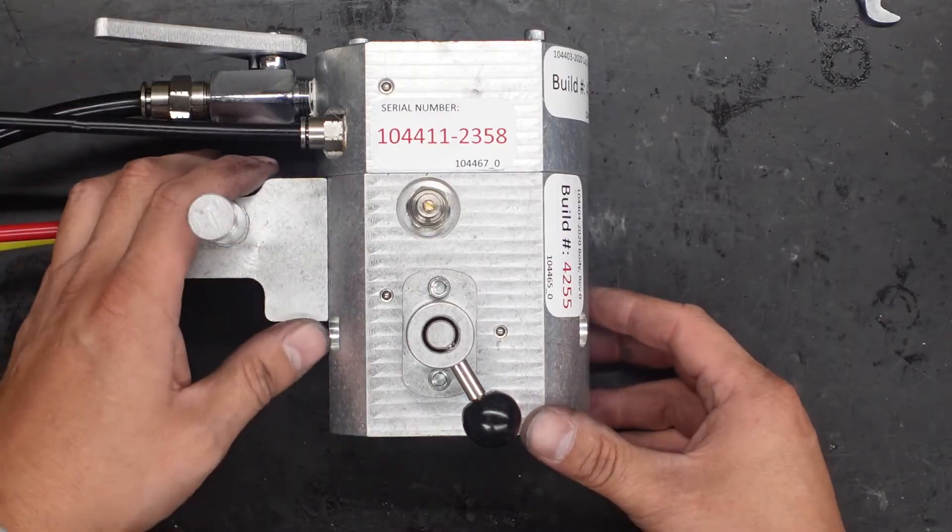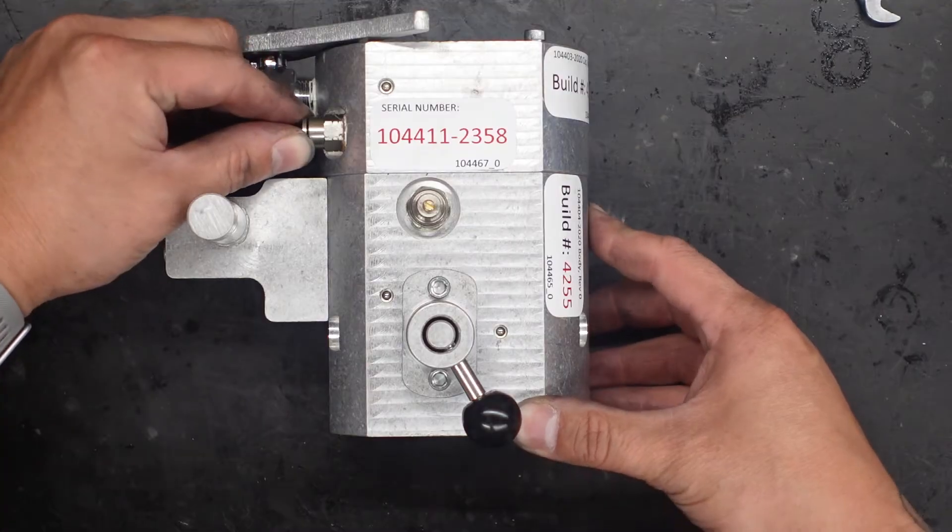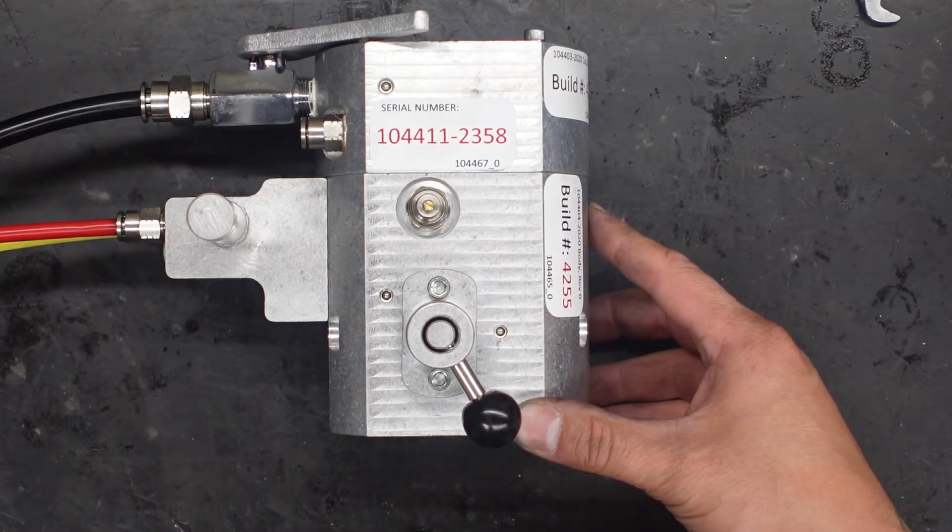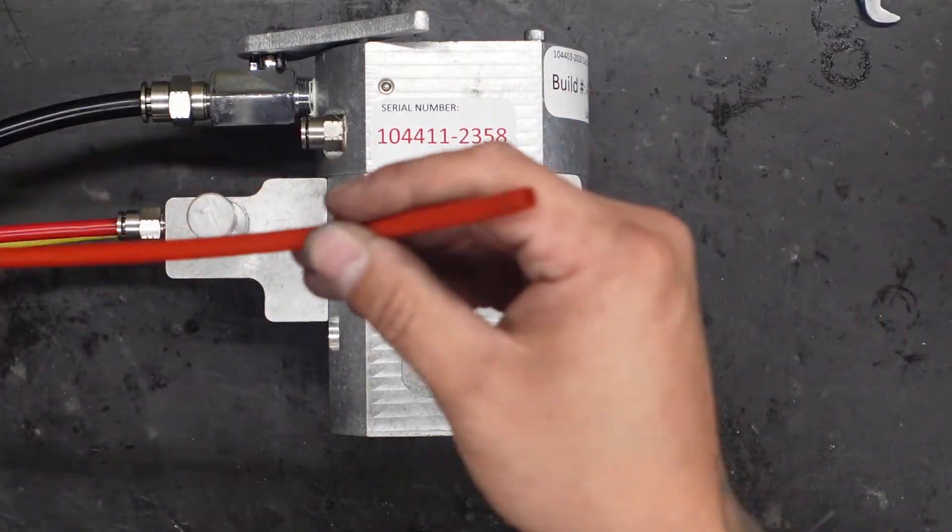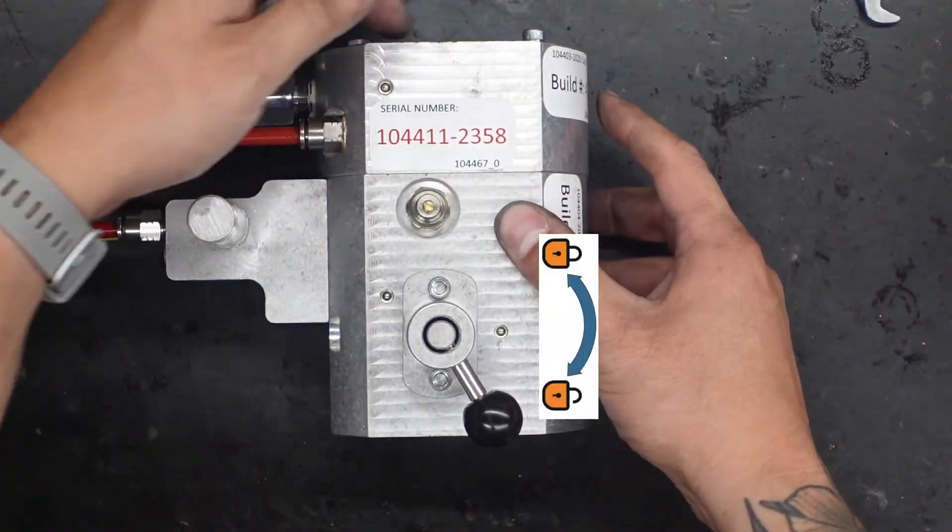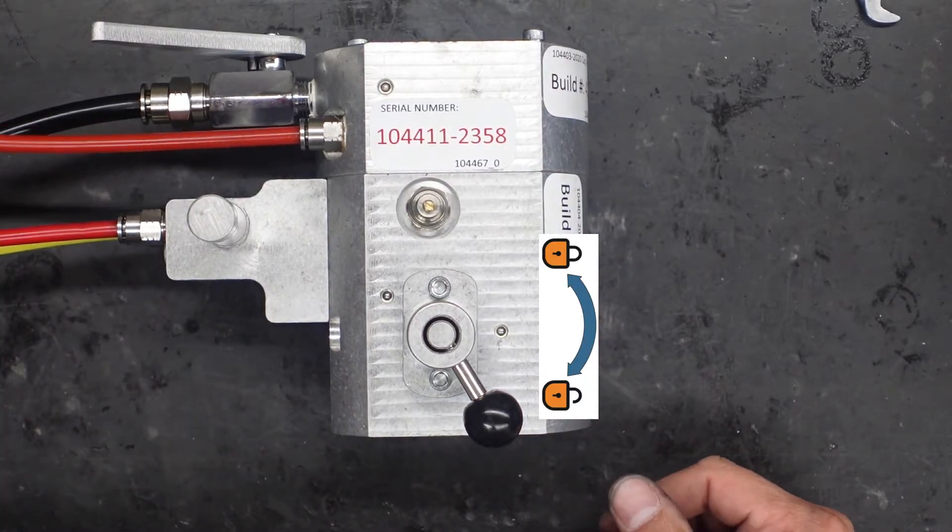So I'm going to shut the air off. I'm going to connect my tester here and this is going to simulate a leak in the seal.